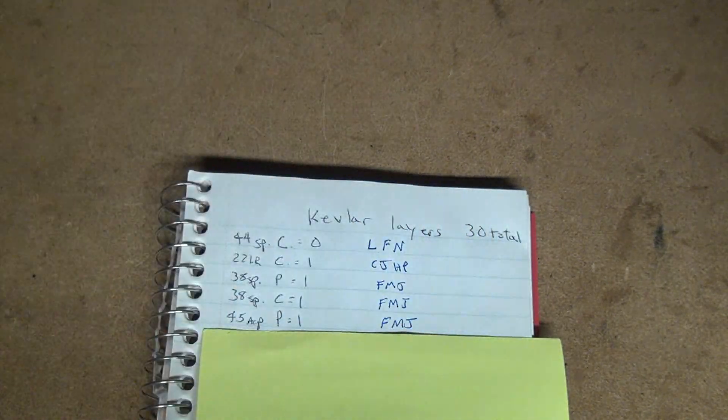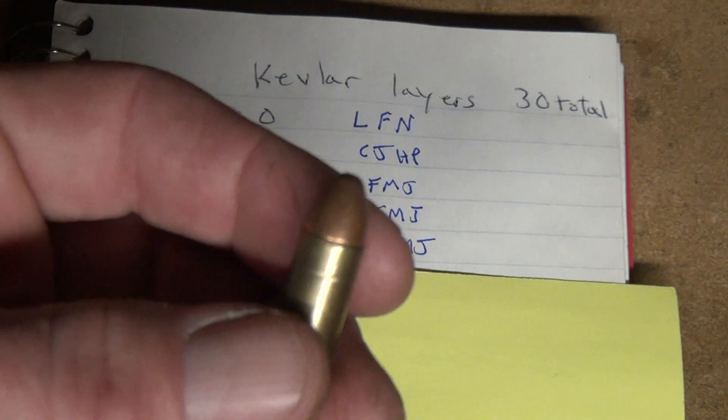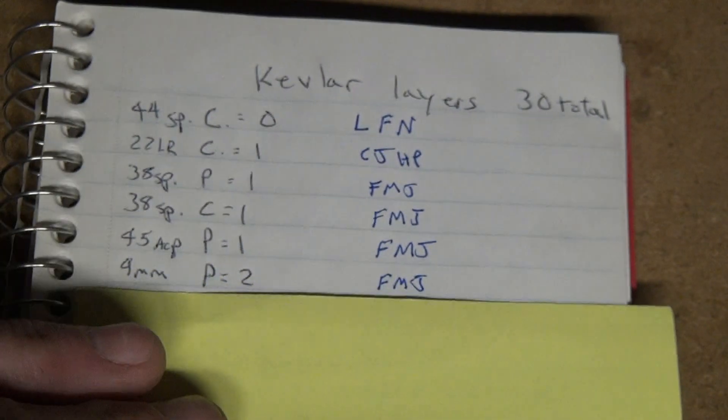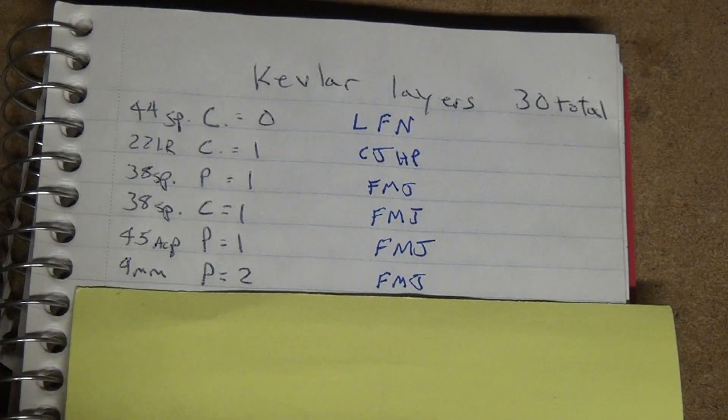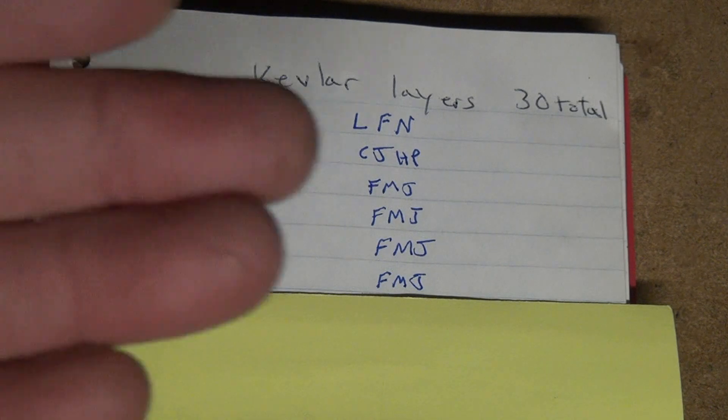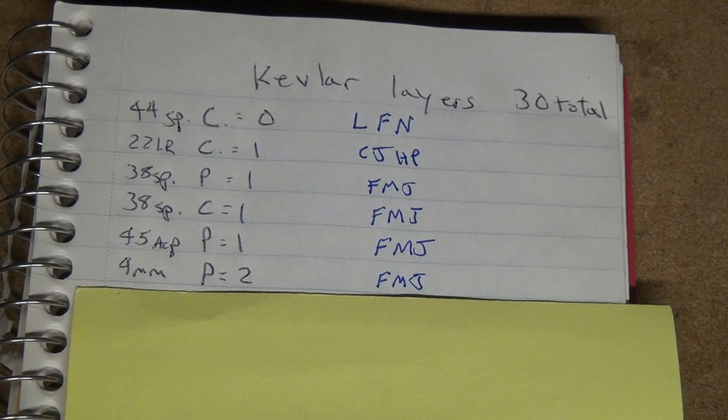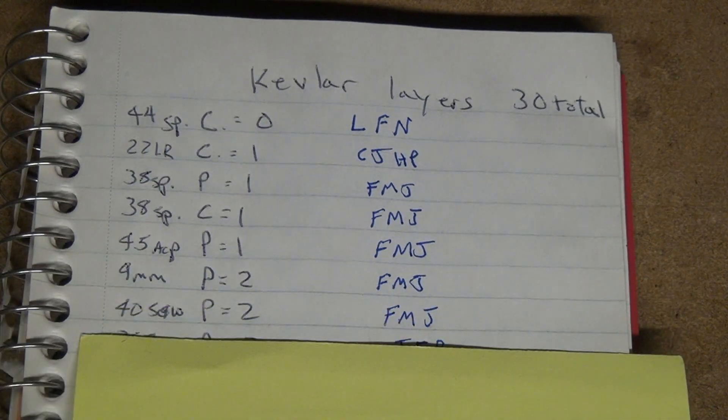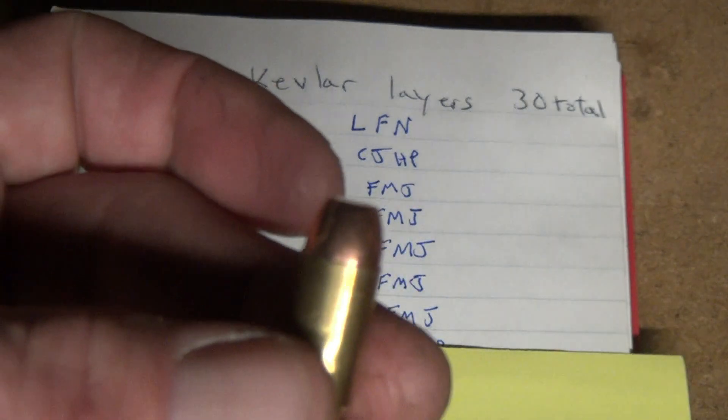Next was the 9mm 115 grain full metal jacket pistol round. That actually went through two layers, two layers, that's it. Next was the .40 S&W. Also went through two layers.